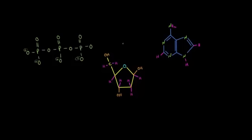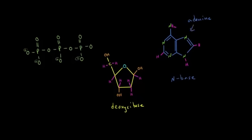Let's briefly review the three structures that make up DNA. First we have a sugar deoxyribose. Then we have a nitrogen base, and the one you're looking at in particular is adenine. And then we have a phosphate group.